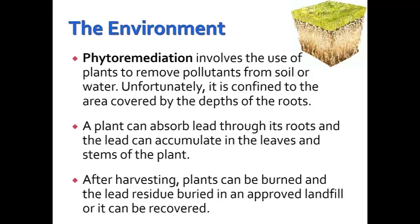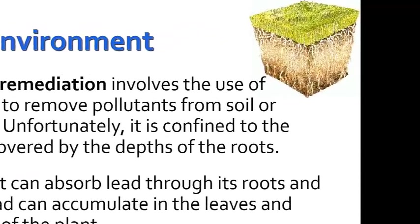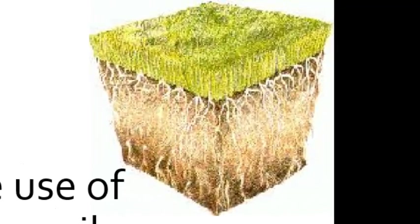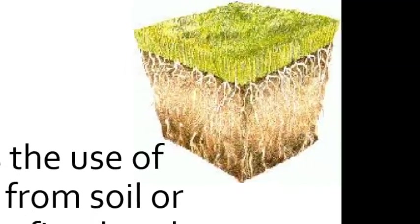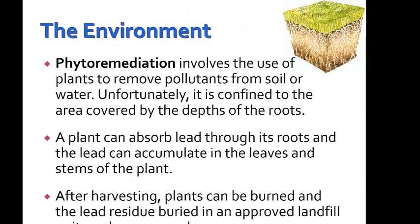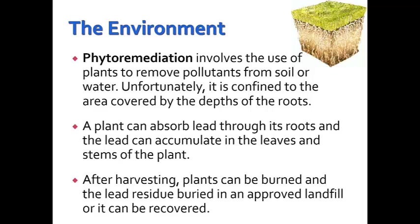Switching gears, let's look at phytoremediation — using biological organisms to change levels of toxic chemicals in the environment. Phytoremediation involves the use of plants to remove pollutants from soil or water. Unfortunately, it's confined to the area covered by the depth of the roots. A plant can absorb lead through its roots, and that lead can accumulate in the leaves and stems. After harvesting, those plants can be burned and the lead residue buried in an approved landfill, or the lead may be recovered.